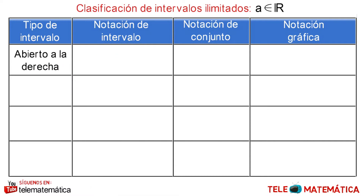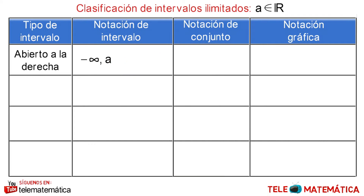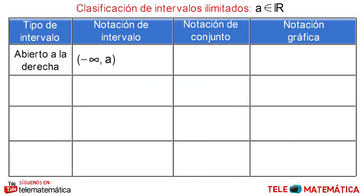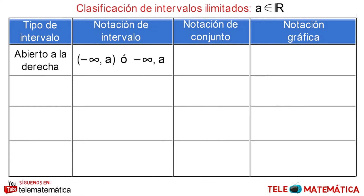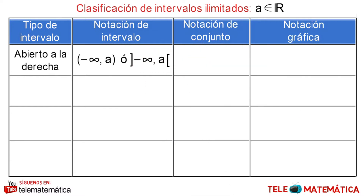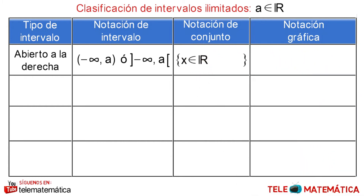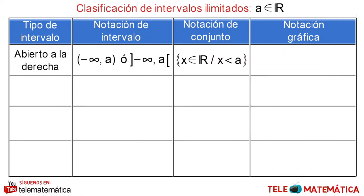La primera clasificación es el intervalo abierto a la derecha, donde su notación de intervalo es desde menos infinito hasta A entre paréntesis, o desde menos infinito hasta A entre corchetes hacia afuera. Su notación de conjunto es, entre llaves, donde todos los valores de X pertenecen al conjunto de los números reales, tal que X es menor que A.